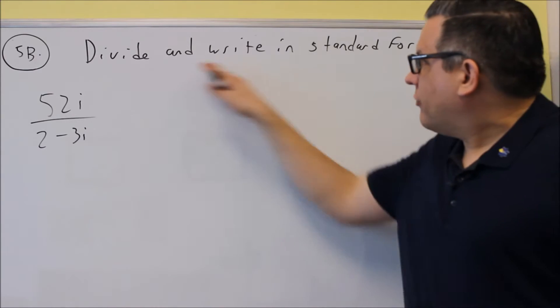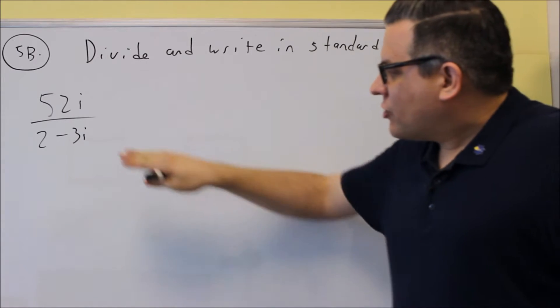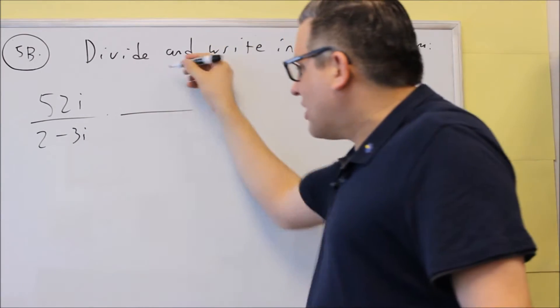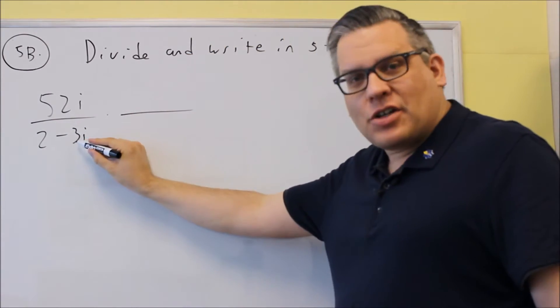Okay, for 5b we have another one where we have to divide and write in standard form. So the procedure that we talked about before is you want to always multiply the top and bottom by the conjugate of the bottom.